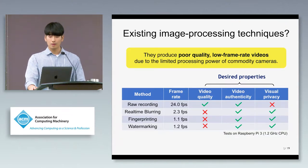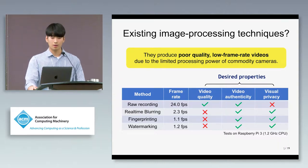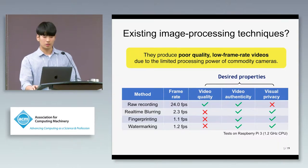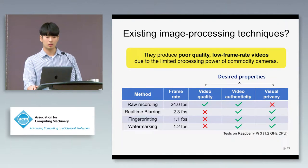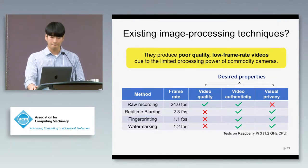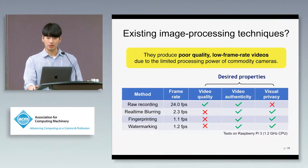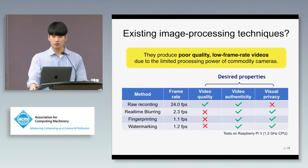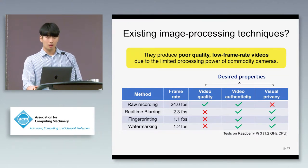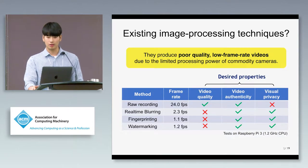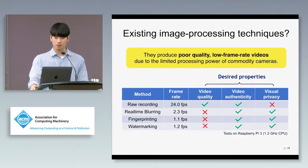thus fails to provide video authenticity. On the other hand, real-time blurring can produce a hash of blurred video on the fly. So we experimented real-time blurring on a Raspberry Pi with 1.2 GHz CPU, but the resulting videos have an average frame rate below 3 fps.